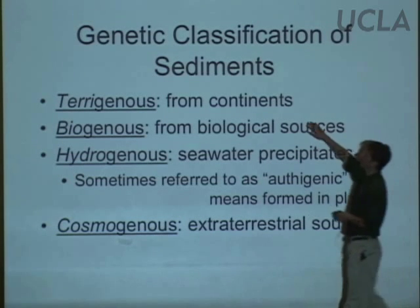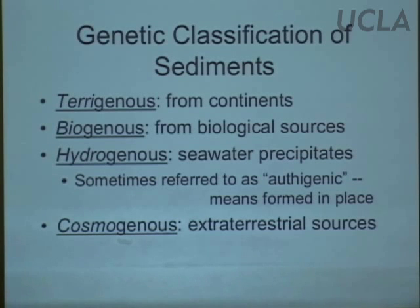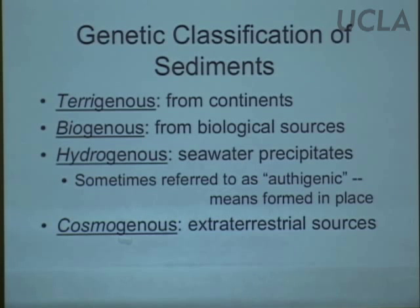For this class we'll divide into four types. Terrigenous sediments are what I've been showing pictures of: formed by weathering of continental rocks. We can expand this to include volcanic rocks in places like Hawaii — bits and pieces of rocks broken down by the weather, by thermal cycling, and transported into the ocean by wind, rivers, debris flows, or landslides.